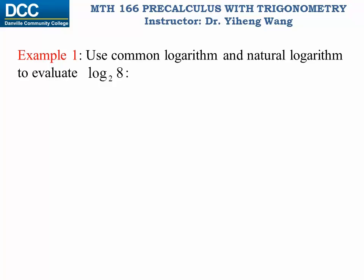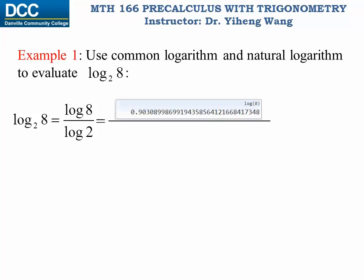Let's apply the change of base formula to evaluate log base 2 of 8. You might already be able to tell that this equals to 3, because 2 raised to the third power equals to 8. Let's still use what we've learned to verify this method works. If we change the base to base ten using common logarithm, log base 2 of 8 equals to the quotient of common logarithm: log 8 over log 2. Using our calculator to evaluate log 8, then log 2, and doing the division, this equals to exactly 3.